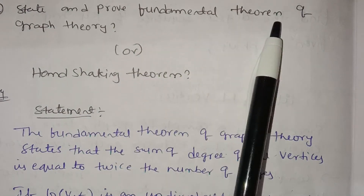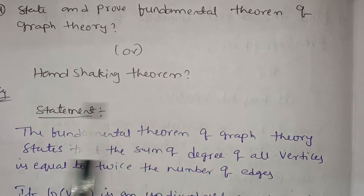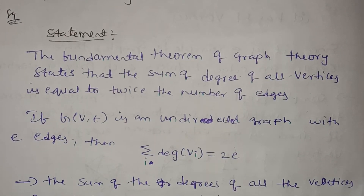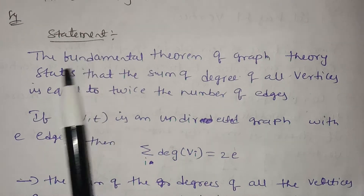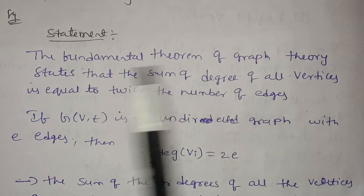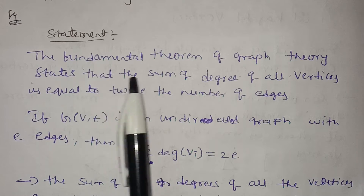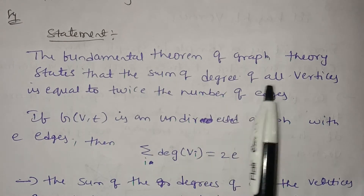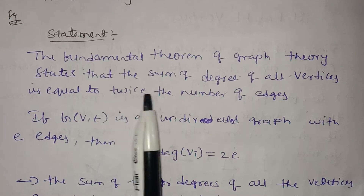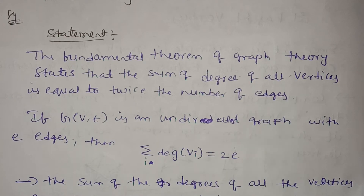State and proof: fundamental theorem and handshaking theorem. The fundamental theorem of graph theory states that the sum of degrees of all vertices is equal to twice the number of edges.